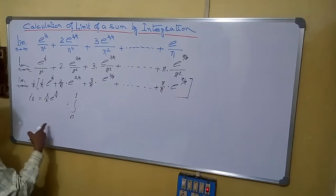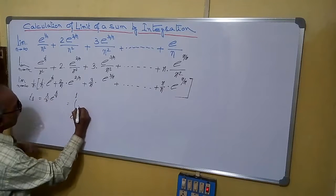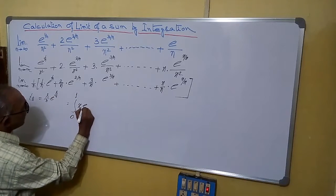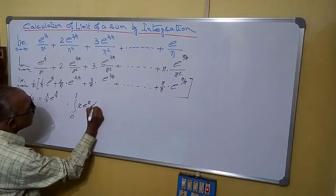Now it will be 0 to 1. Instead of R/n, write x·e^x dx.